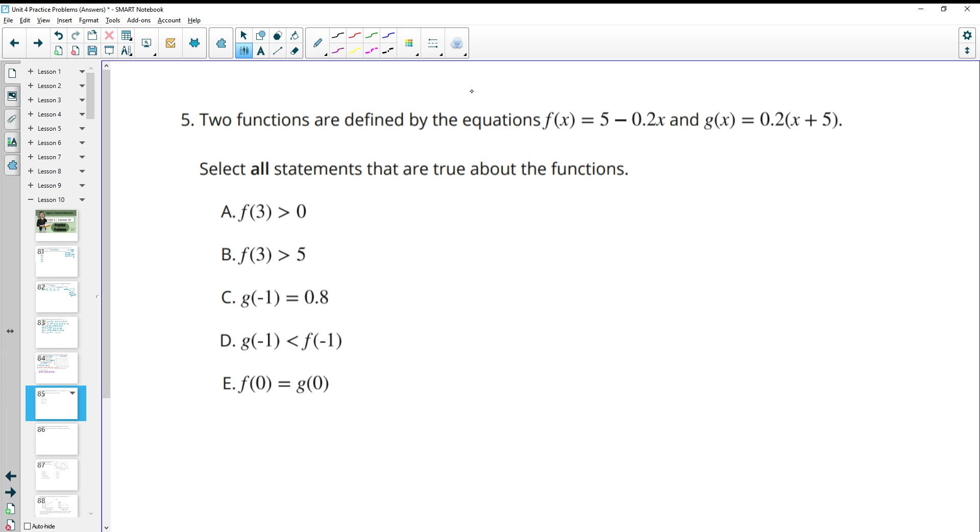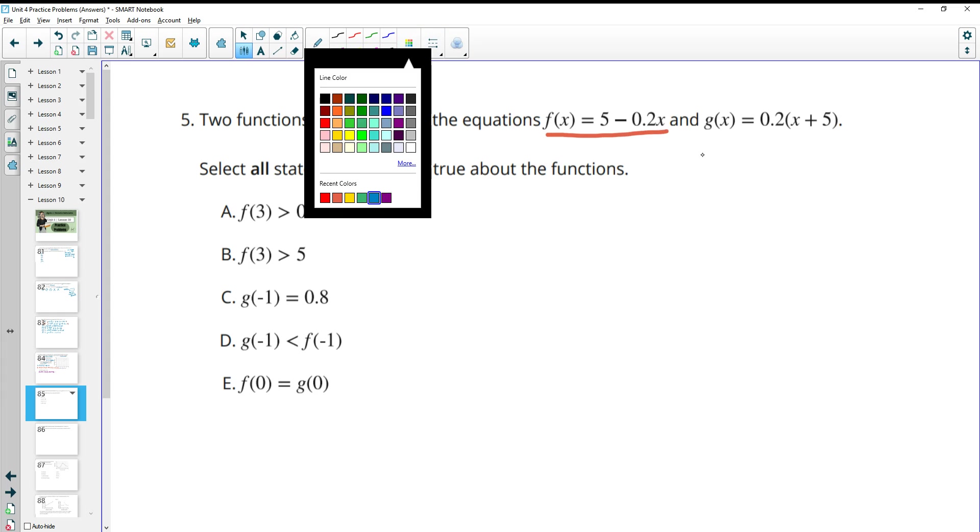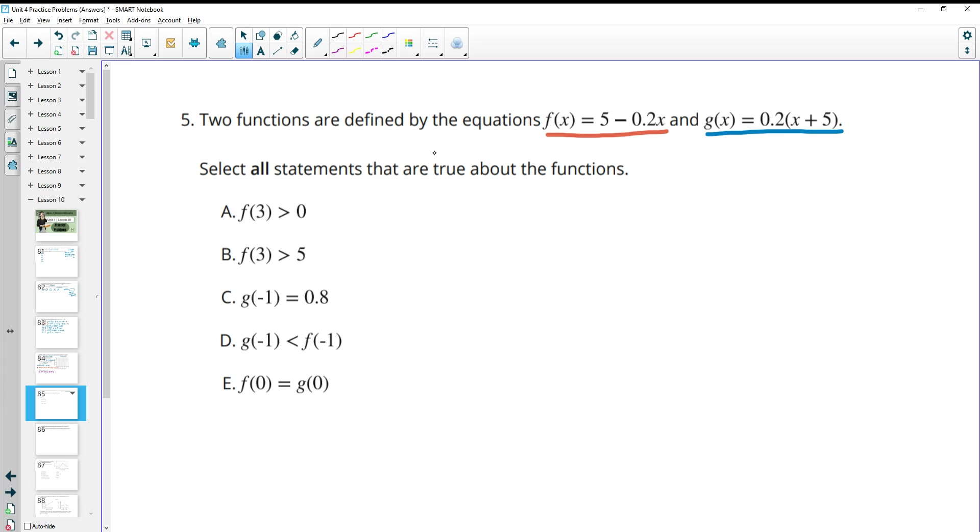Number 5, two functions are defined by these equations where f(x) = 5 - 0.2x and g(x) = 0.2(x + 5). Select all statements that are true. So this first one is asking us about the f function. Is f(3) > 0? So let's find f(3). And this means take and plug 3 in for x in the f function. So we'll plug in 3 for this x. So then we get 5, and then -0.2 times 3 is -0.6. And that gives us 4.4. So what this is really saying is that 4.4 is greater than 0 since this is f(3). And that's a true statement.